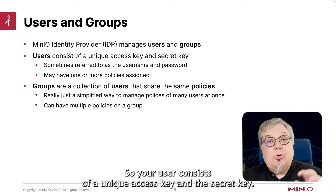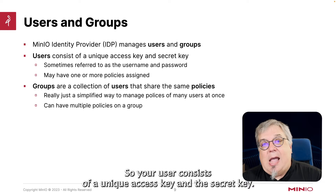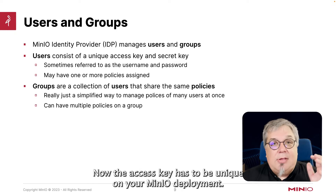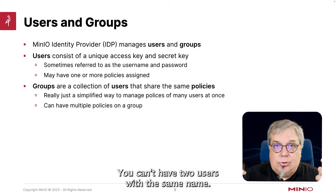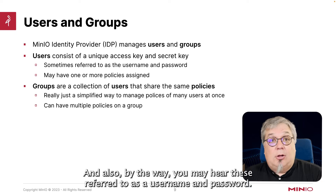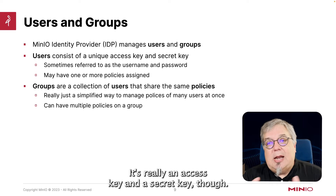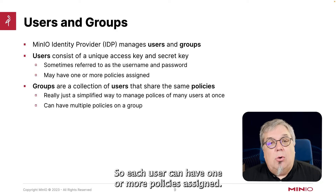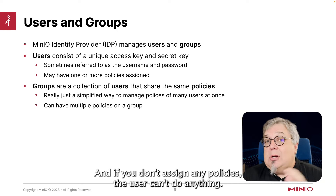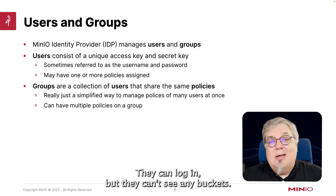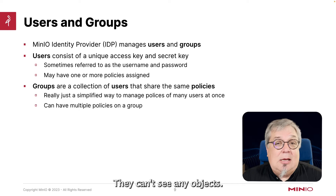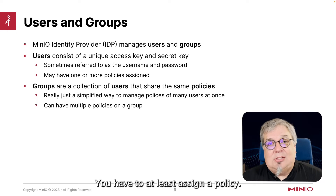Your user consists of a unique access key and a secret key. The access key has to be unique on your MinIO deployment — you can't have two users with the same name. You may hear these referred to as a username and password, but it's really an access key and a secret key. Each user can have one or more policies assigned. If you don't assign any policies, the user can't do anything. They can log in, but they can't see any buckets or any objects. You have to at least assign a policy.